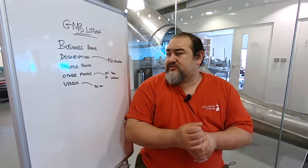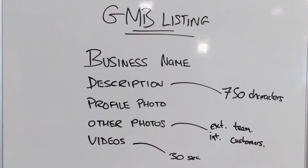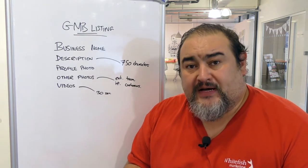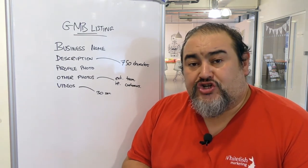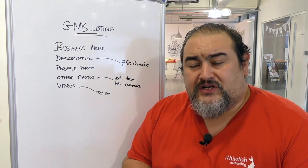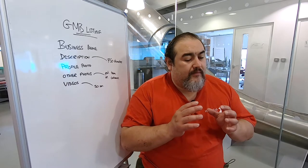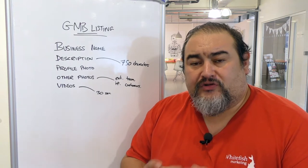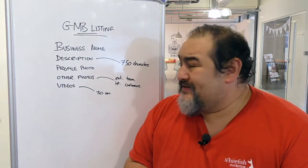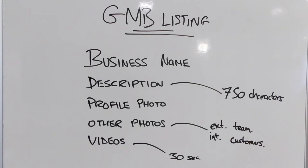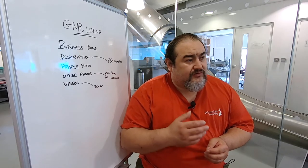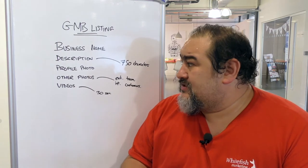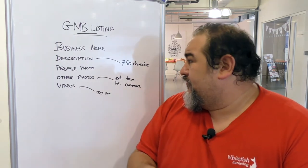Then we come to the main description. You've got 750 characters for the full description, so do go ahead and use all 750 characters. There is a shortened version of 250 characters which is displayed first, so try to get your most important information into those first 250 characters — that's what's shown before someone has to click the read more button. This is where you want to put in your location, keywords, and main data.